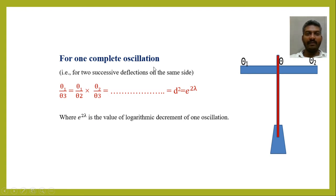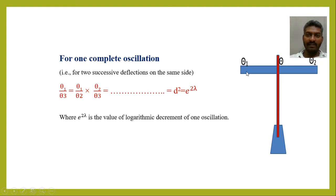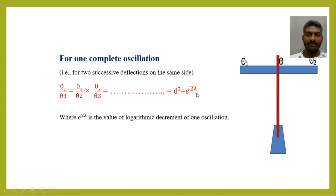For one complete oscillation, the spot moves from θ1 to θ2 and then to θ3. So θ1/θ3 = (θ1/θ2) × (θ2/θ3). Since θ1/θ2 = D and θ2/θ3 = D, this becomes D². Since D = e^λ, D² = e^(2λ), where e^(2λ) is the value of the decrement for one complete oscillation.